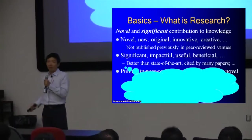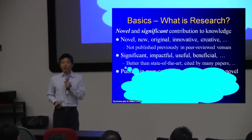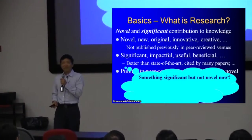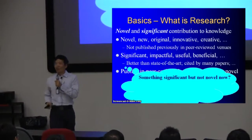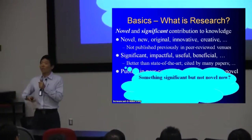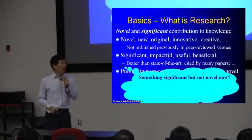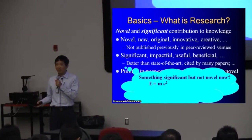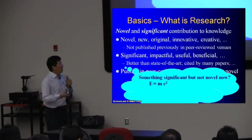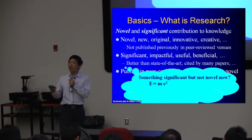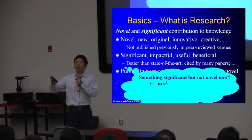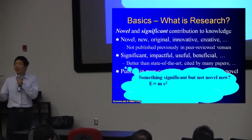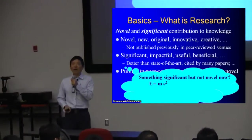Both novelty and significance are very important — you cannot miss one. Can you think of something that is significant but not novel anymore? A lot of published work must be very significant but not novel anymore. For example, the most famous equation: E equals MC squared. Einstein discovered this in 1905. It was novel at that time, and its significance is still felt today. If your thesis is to discover E equals MC squared, I'm sure you will not pass the defense — unless you figure out an ingenious new proof of it.